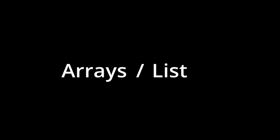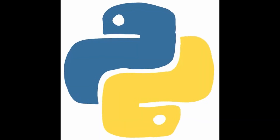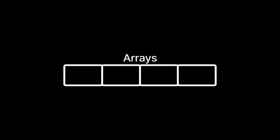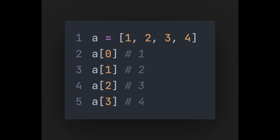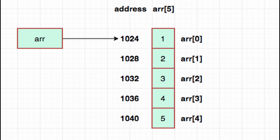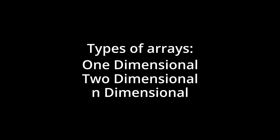Arrays or lists. The first and most basic data structures we are going to cover are arrays, or lists if you are in Python land. Arrays are just collections of elements stored in a fixed order and can be accessed by their index, which starts with zero. The elements are stored in continuous memory locations so that they are easily accessible. There are mainly three types of arrays: 1-dimensional, 2-dimensional, and n-dimensional arrays.